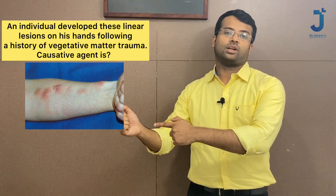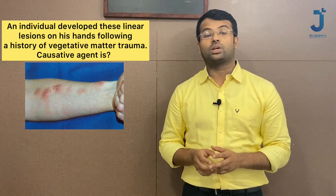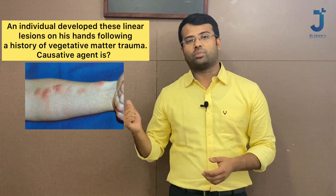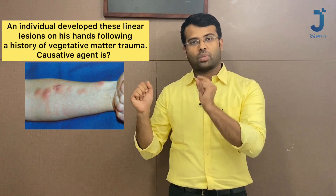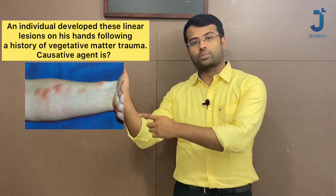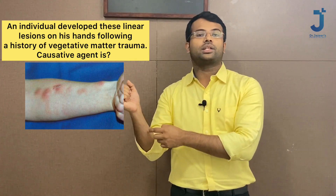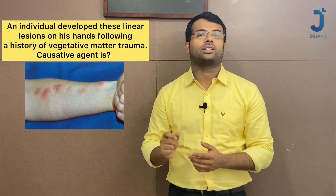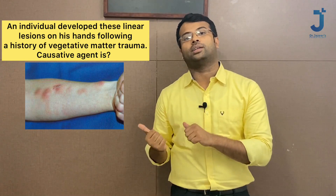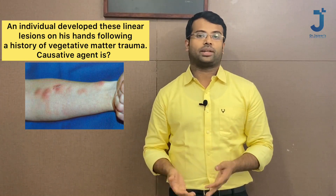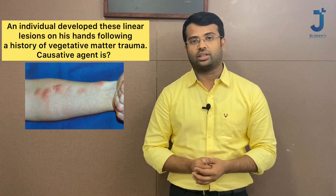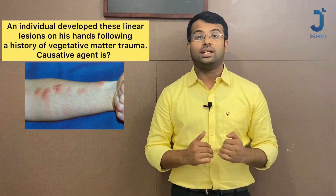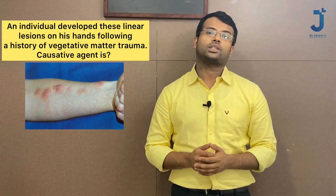Next question: an individual developed linear lesions over the hands following trauma with a vegetative matter. In this image you can see multiple skin lesions over the forearm arranged in a linear fashion. When you see such a pattern and the patient has a traumatic history — for example, a rose thorn prick — what is the likely diagnosis?